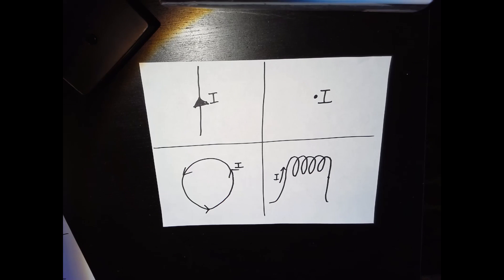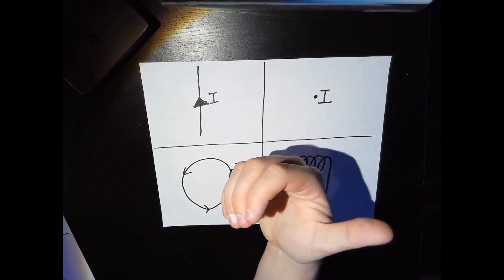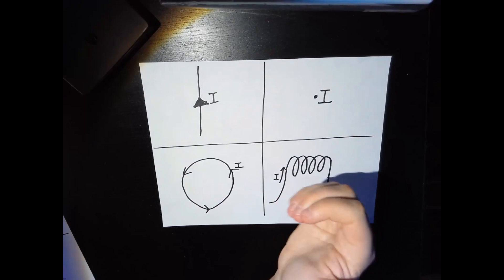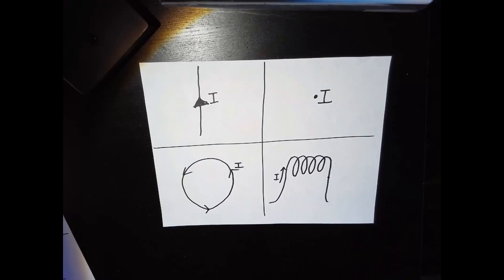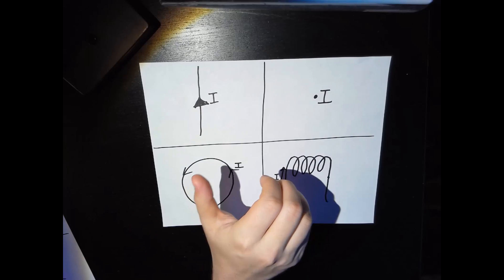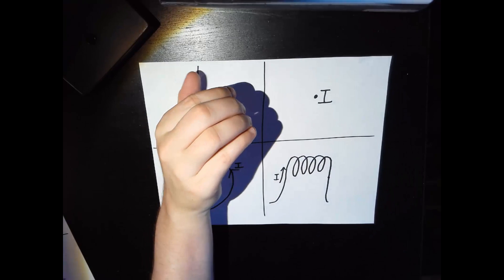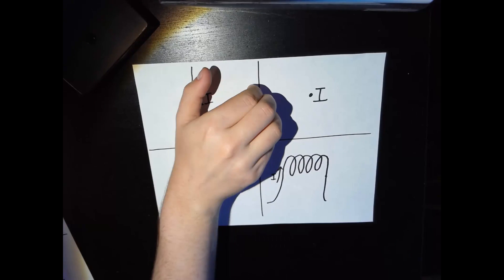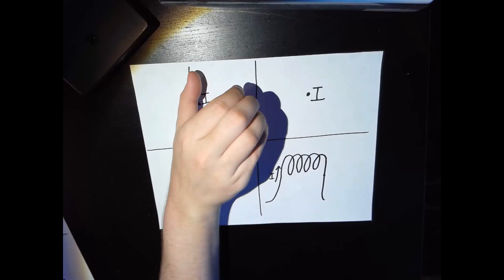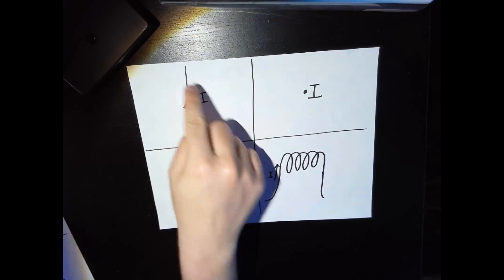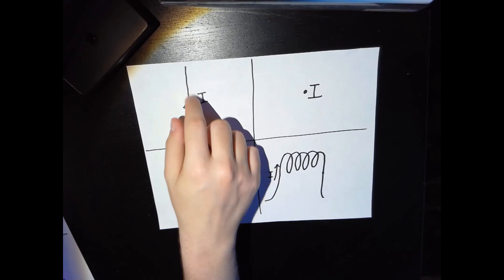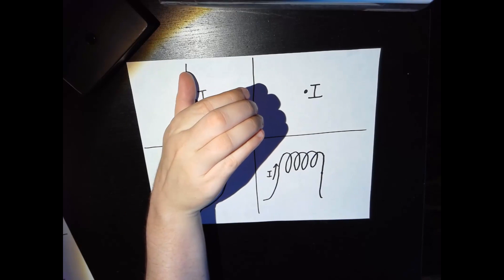In this video we're going to use the curl right-hand rule to find the induced magnetic field from an electric current, with my right hand in the shape of that curl symbol. Starting with the first example, I can see that I have a current going straight up, so I'm going to place my thumb pointing up and see how my hand curls around either side of the page. On the right-hand side of the current, I can see right away that my curl is going into the page.